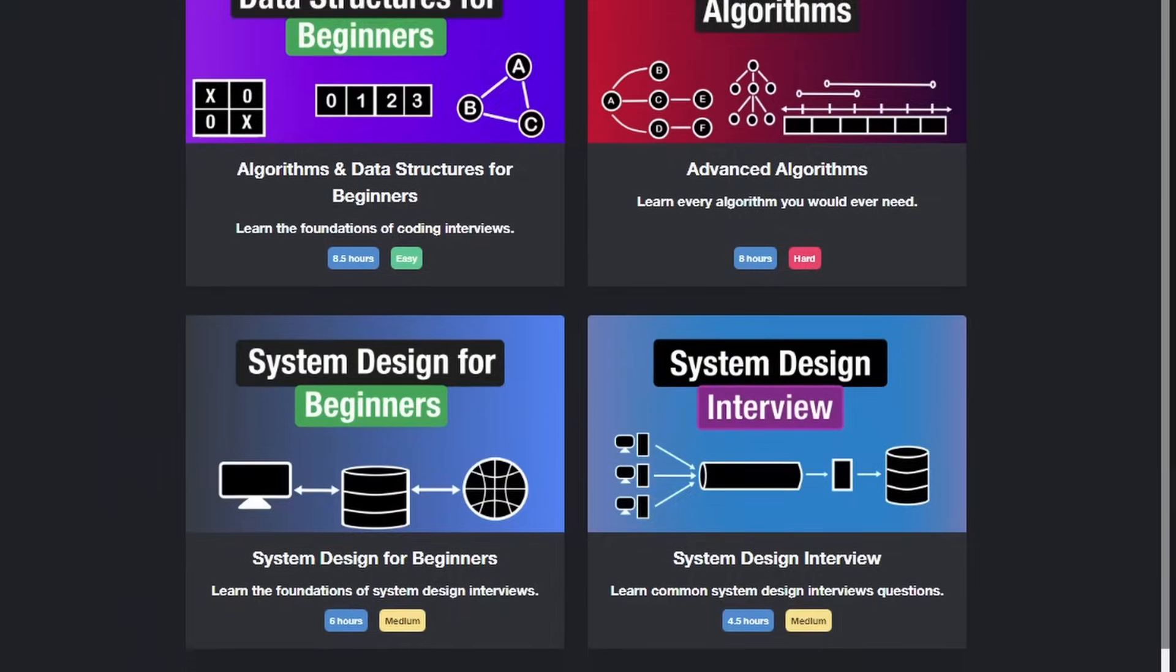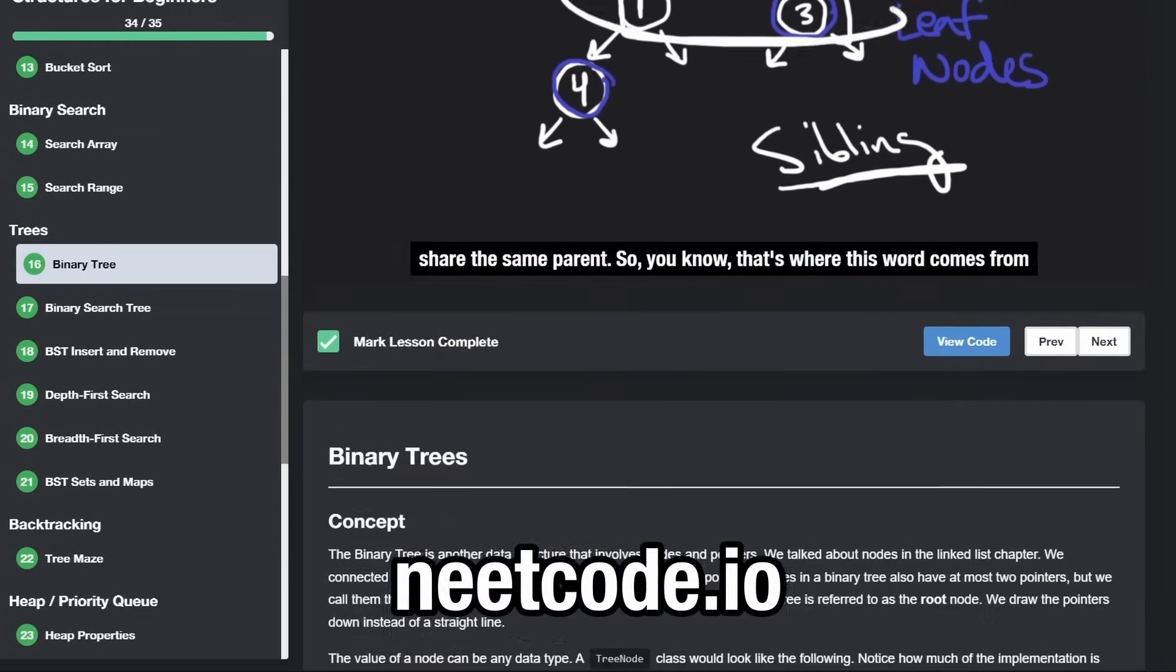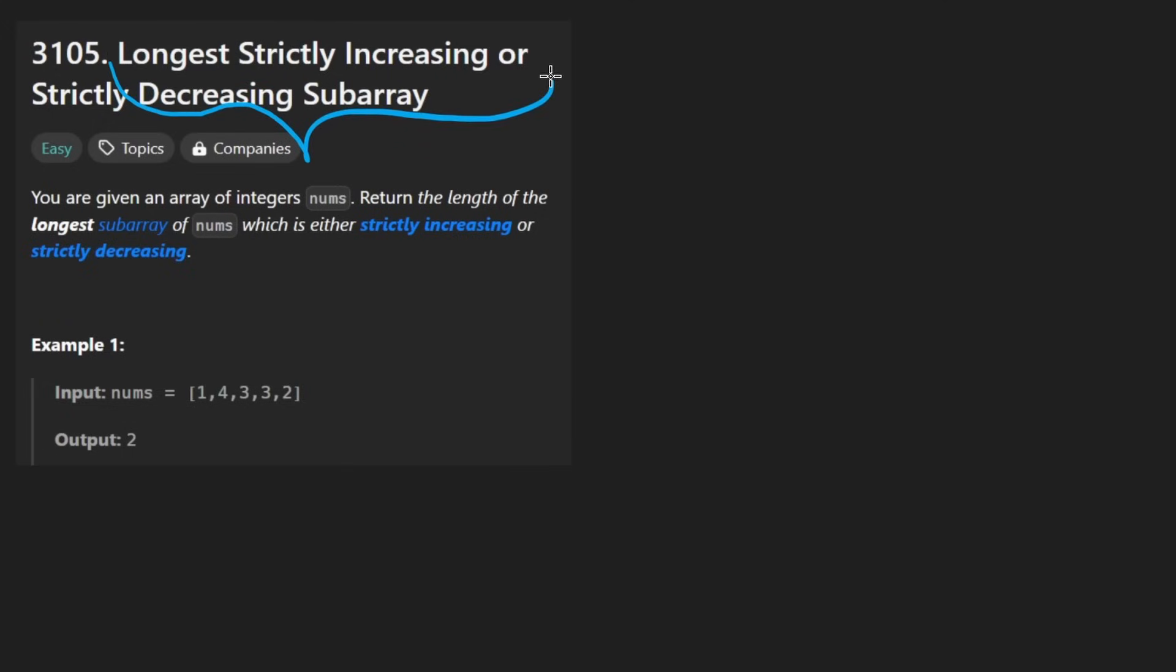Hey everyone, welcome back and let's write some more neat code today. So today let's solve the problem: Longest strictly increasing or strictly decreasing subarray. So as the problem states, we're basically given an input array of numbers, so I'll draw it over here. And among all of the possible subarrays, so a subarray is like a contiguous part of the original array, we want to find the longest one that is either strictly increasing or strictly decreasing. So what do they mean by that?